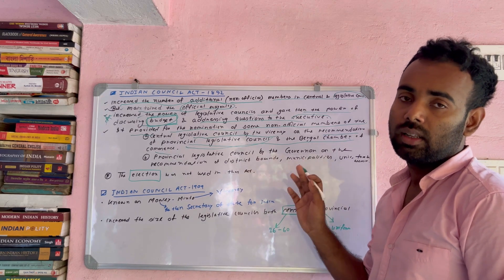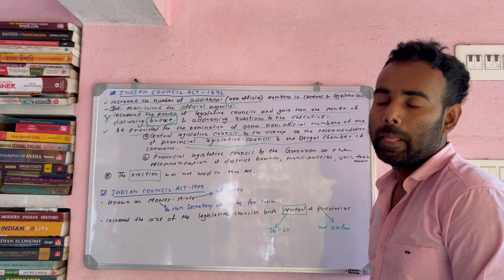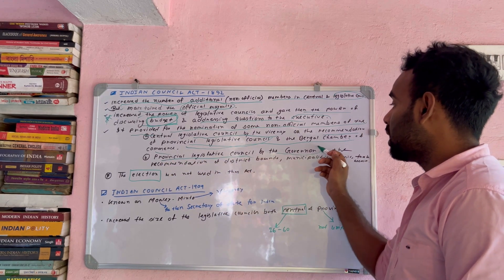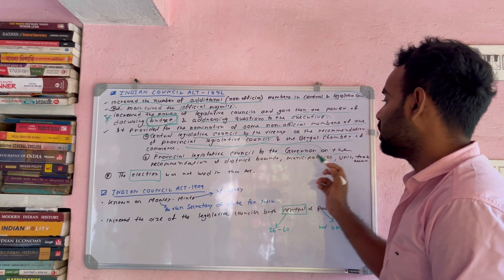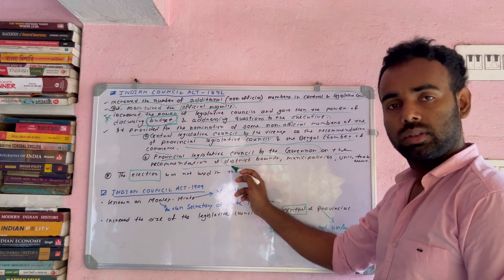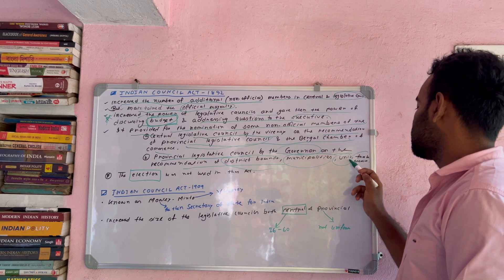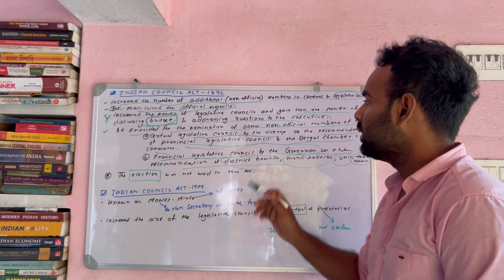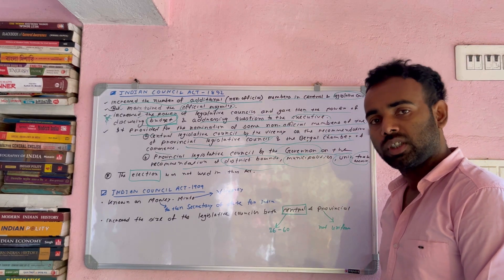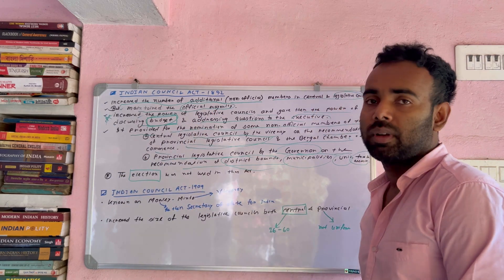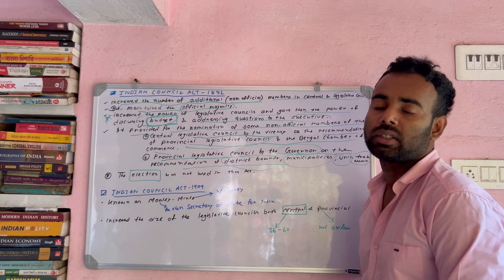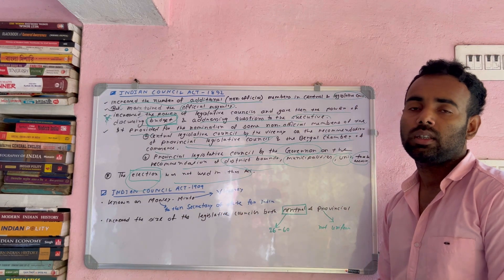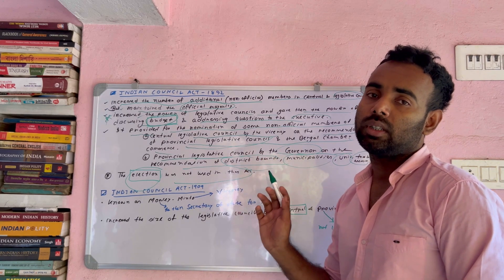The other recommendation is that the non-official members are nominated for the Central Legislative Council and the Provincial Legislative Council. You can see that indirect election has not been used — the elections were not used in this Act. So the elections were not used in the 1892 Indian Council Act.